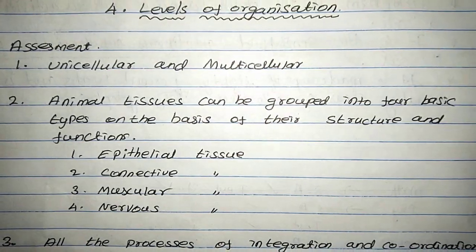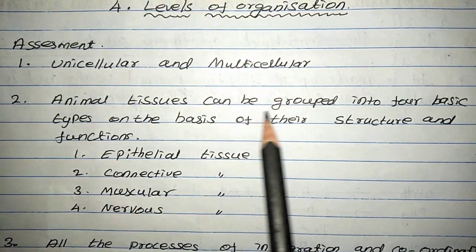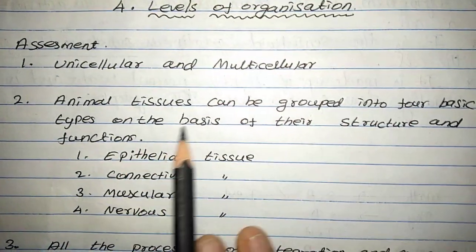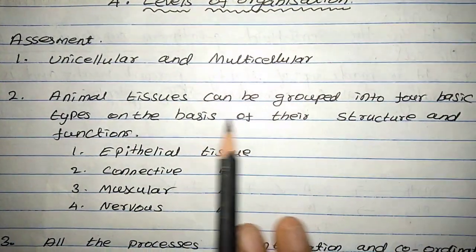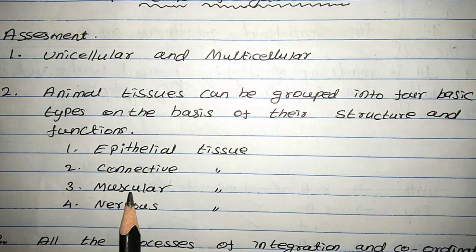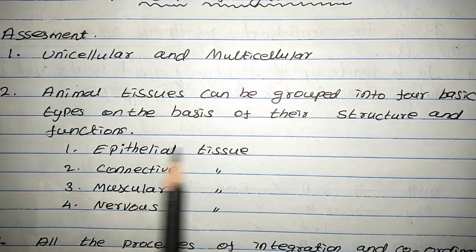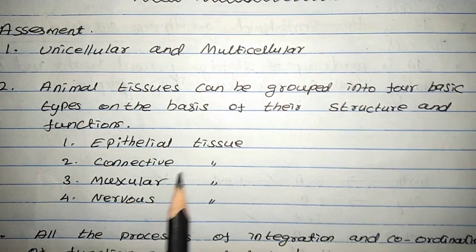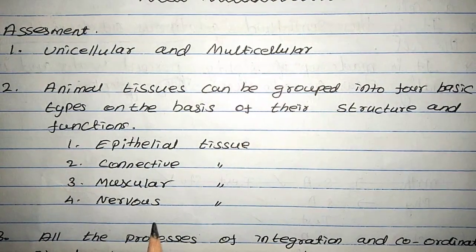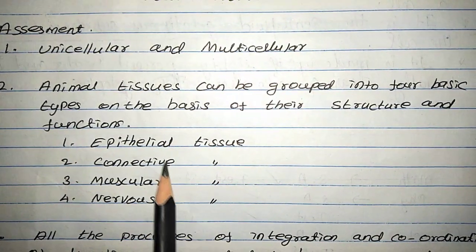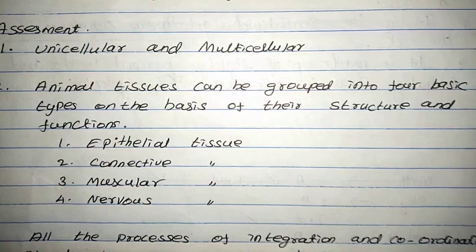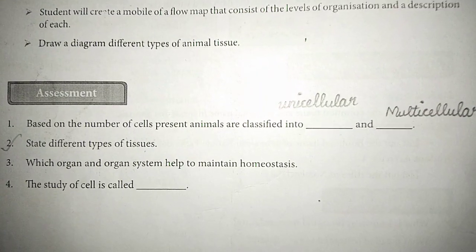Second answer: animal tissue can be grouped into four basic types. The four basic types of tissue are connective tissue, muscular tissue, and nervous tissue — these are the four basic types.